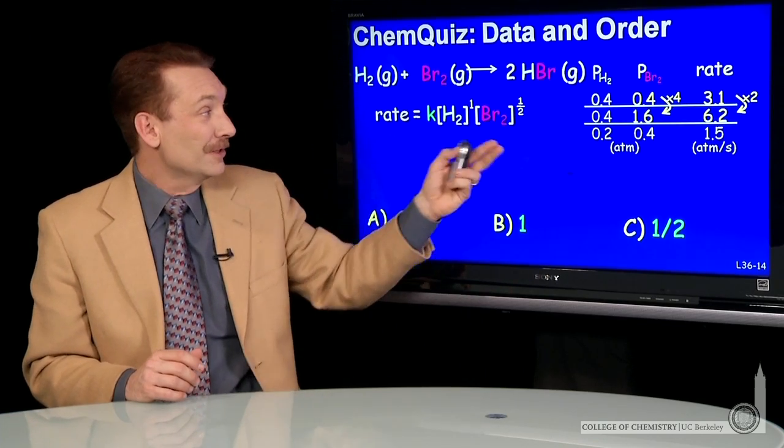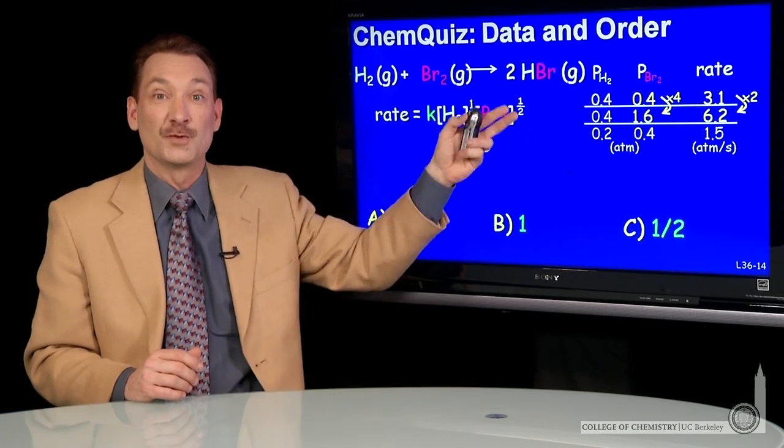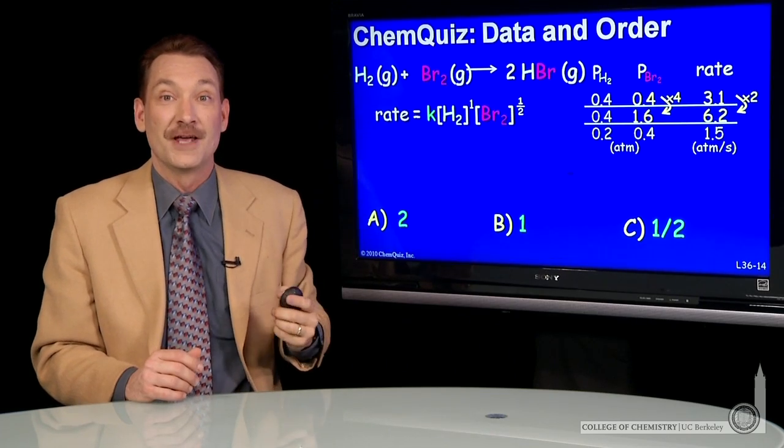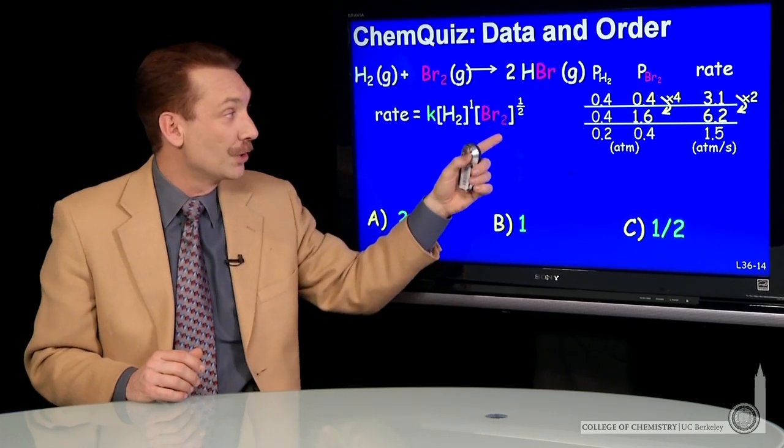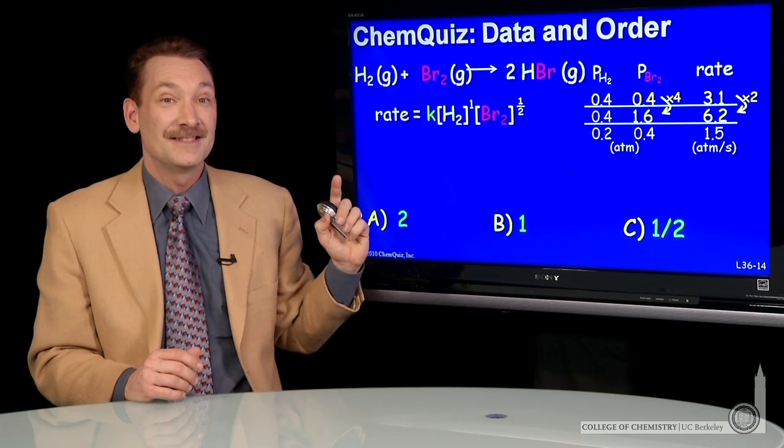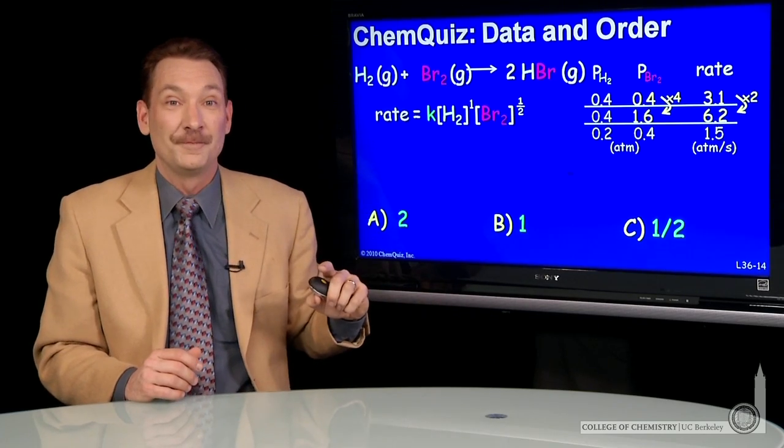So what it looks like is our overall power is 1 and 1/2, or 3/2. The overall order of the rate is 3/2. We just asked for the order with respect to Br₂, and in that case, it's 1/2.